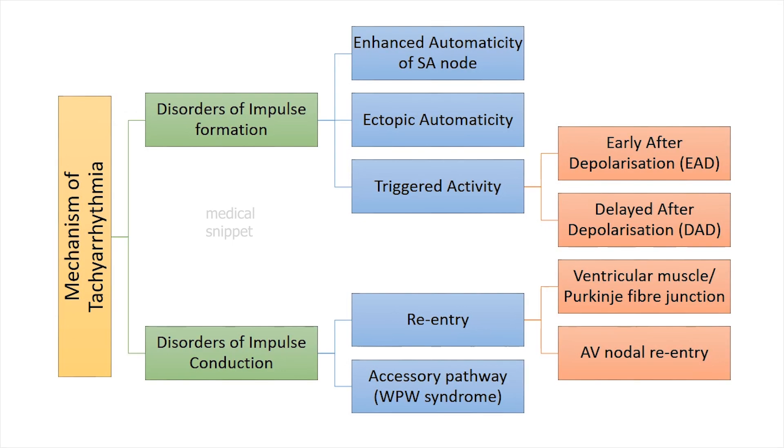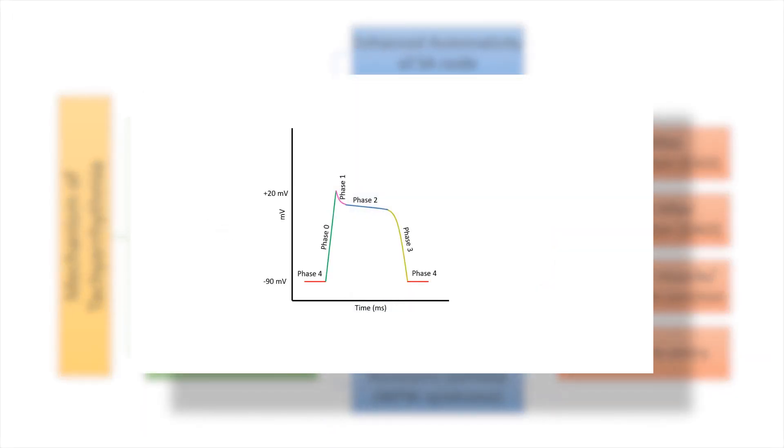Before proceeding to re-entry mechanism, it is important to know about the effective refractory period of cardiomyocytes. During the effective or absolute refractory period, the cardiac myocyte cannot be excited, whereas in the relative refractory period minimal excitation can occur.